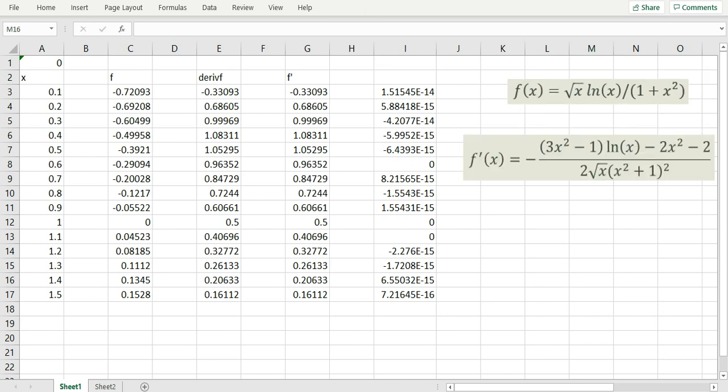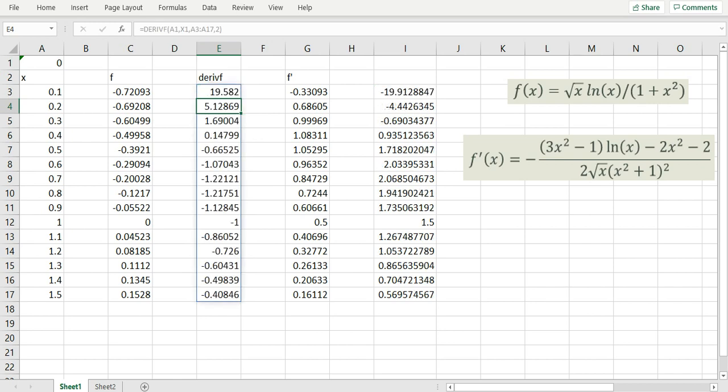One more thing I would like to show you here is how to compute higher order derivatives by simply supplying a derivative order. So if I go here to my formula and the default for the derivative is one, so if I just put one in the fourth argument nothing is going to change really. But now I can compute second order derivatives or third order or fourth order by simply changing this number to two. So this is going to give me now the second order derivative of this function in this column.